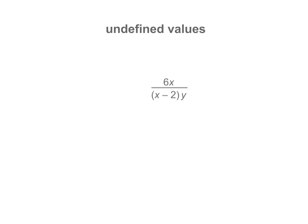Some algebraic expressions are undefined at certain values. In this example, what value would cause the denominator to equal zero? It's obvious that if y equals zero, then the denominator would be equivalent to zero.